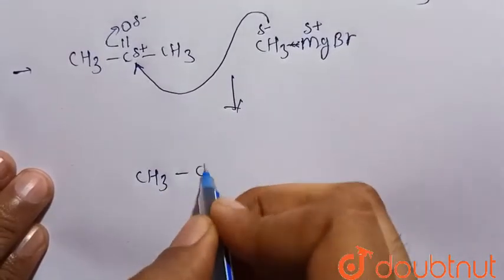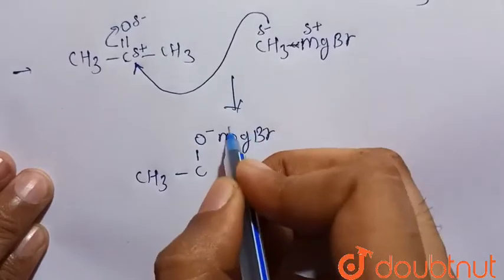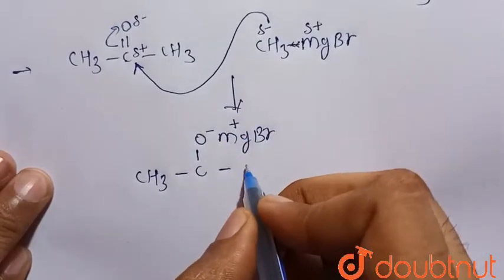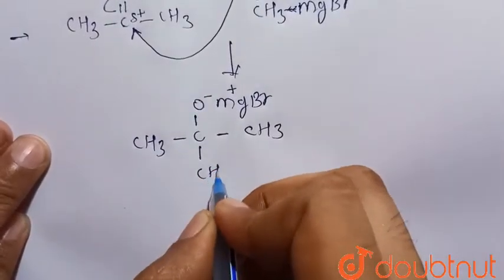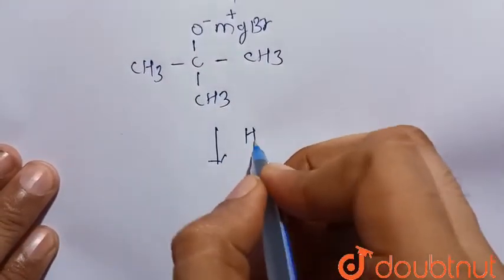CH3-C(O-MgBr+)(CH3)-CH3. Then further it is hydrolyzed by acidic hydrolysis, that is H3O+.